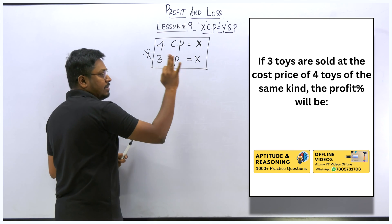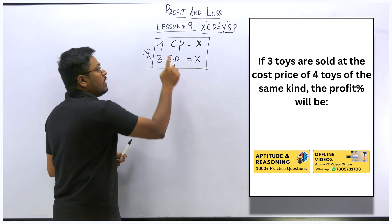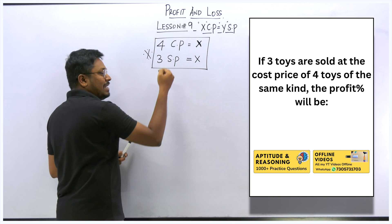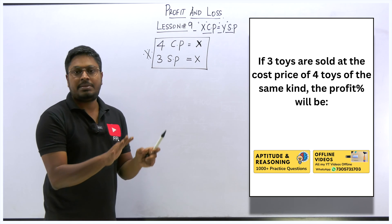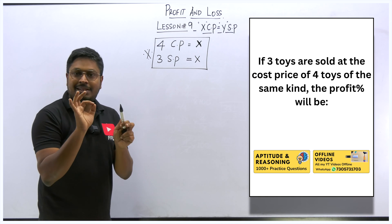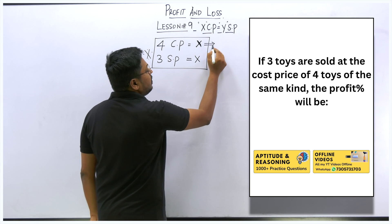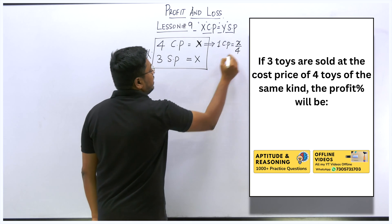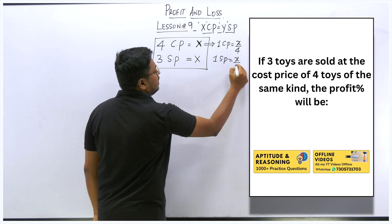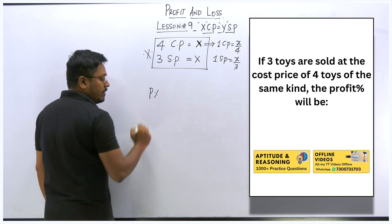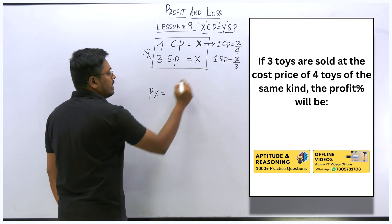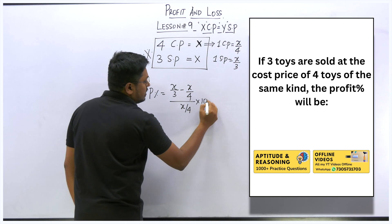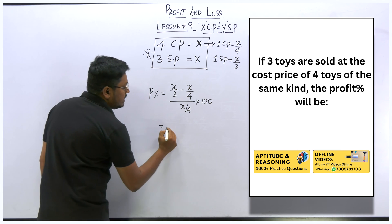Three toys' selling price equals four toys' cost price — we've fixed that as x and x, both the same. This mirrors the lesson three concept: there, a rupee amount was given directly; here the amounts are equal so we fix both as x. Now find one toy's cost price: one toy CP = x/4. Similarly, one toy SP = x/3. Our target is profit percentage: (SP − CP) / CP × 100 = (x/3 − x/4) / (x/4) × 100. Taking LCM as 12: